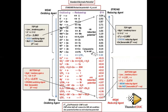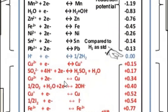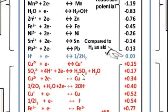Now comparing copper with hydrogen: hydrogen is here in the table, and copper is below hydrogen. So hydrogen is going to be at the anode — the negative electrode — and copper is going to be at the cathode — the positive electrode.